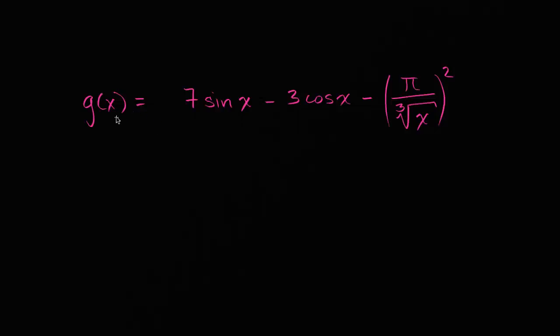What we want to do is find the derivative of this g of x, and at first it could look intimidating. We have a sine of x here, we have a cosine of x, we have this crazy expression here with a pi over a cube root of x, we're squaring the whole thing, and at first it might seem intimidating.